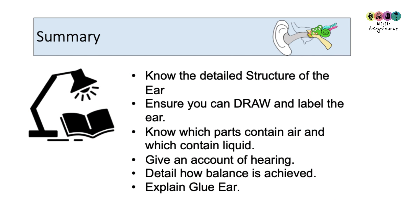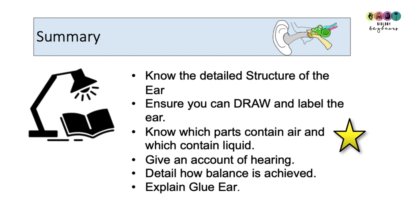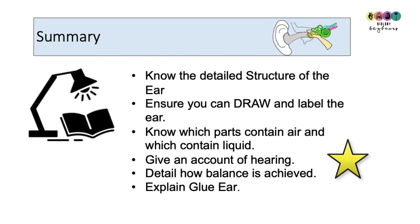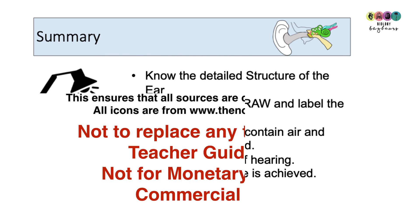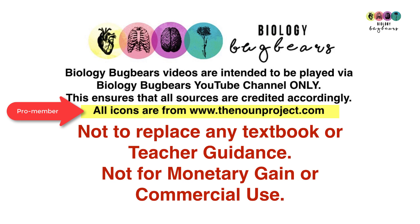For your exam you need to know the detailed structure of the ear and be able to draw a diagram — it's a tricky diagram so practice it. You need to know which parts contain air and which contain liquid, give an account of hearing, detail how balance is achieved, and explain glue ear. Draw lots of diagrams, write good notes, and do the exam questions. Best of luck with the revision.